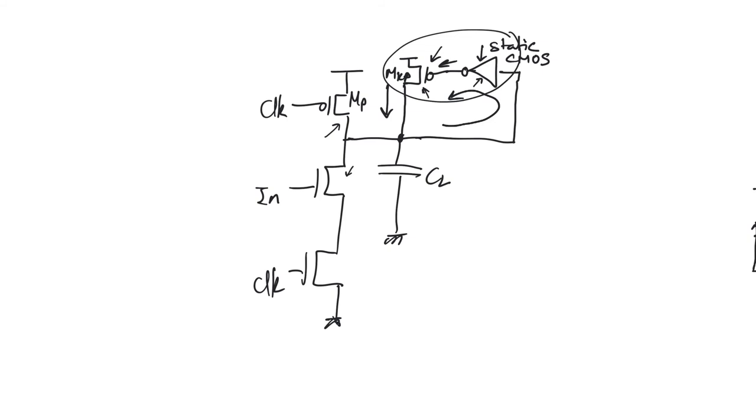The problem here actually is that we have a feedback path. This is the main problem with this. And whenever we use something to solve a problem, we have to go and check that the cases which did not have a problem, the cases that were not problematic, have not now been complicated. And so we did not have a problem while precharging. We will still not have a problem while precharging. In fact, this transistor is only going to help in the precharge. We did not have a problem while trying to evaluate zero, because while trying to evaluate zero, we had a low impedance path to ground through the pull-down network and the transistor NN. But in this case, we will have a problem while trying to evaluate zero.